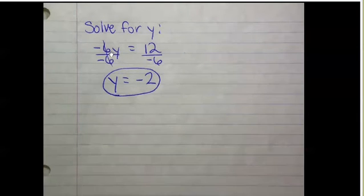And then that makes sense here that negative 6 times negative 2, a negative times a negative is a positive, would be positive 12.